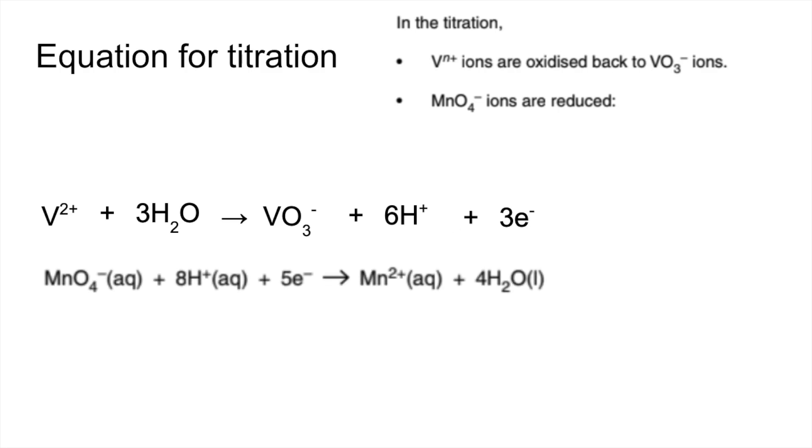We were given that one. So now when we combine these, we need the electrons to disappear. So if we multiply the top one by 5, the bottom one by 3, that's going to get the electrons both up to 15. They'll drop out. And you can see that's going to give us the ratio we're after as well.